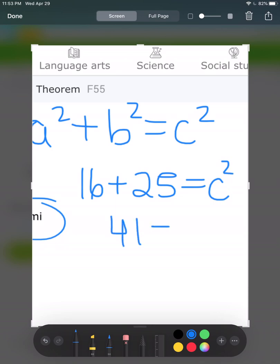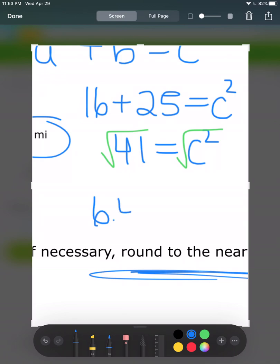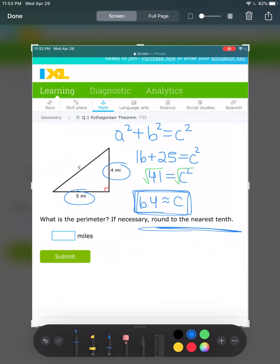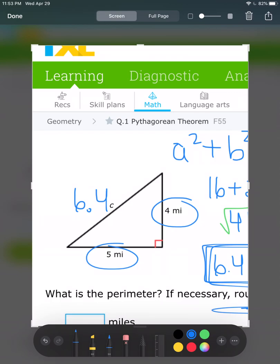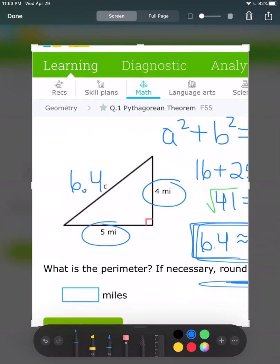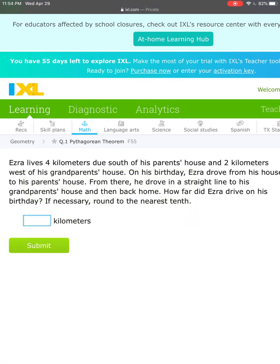16 and 25 make 41. I want to take the square root to find C. The square root of 41 is 6.40. Rounding to the nearest tenth, that's 6.4 approximately equals C. Now we can use that 6.4 for our perimeter. 4 plus 5 is 9, plus 6.4 gives me 15.4 as my final answer.